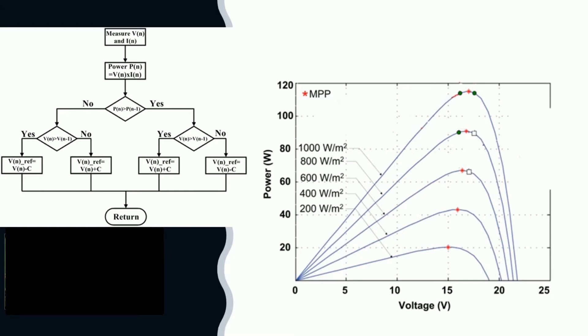Before we begin, let us have a quick recap on this modified flowchart. In this modified flowchart I have used the voltage as a new quantity rather than the duty cycle. This voltage provides us very useful information about the slope of the photovoltaic curve.